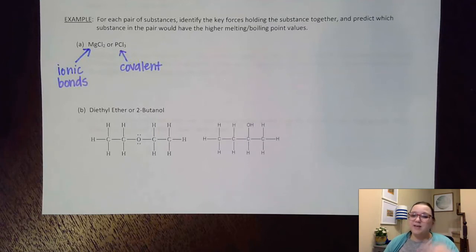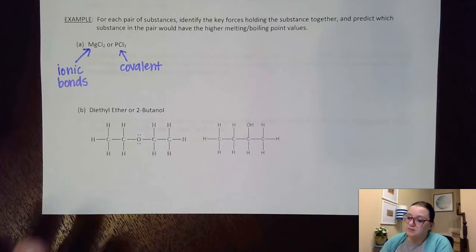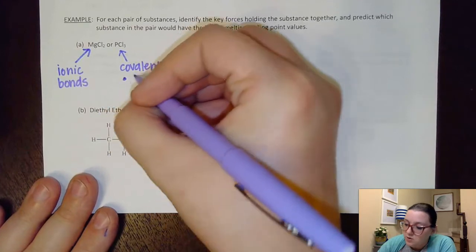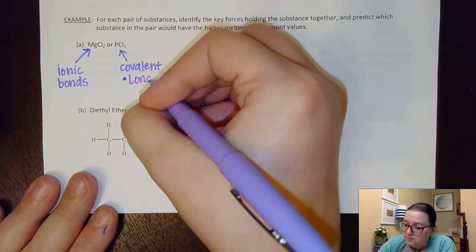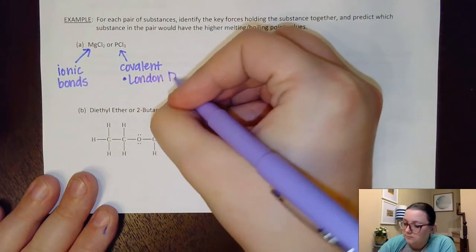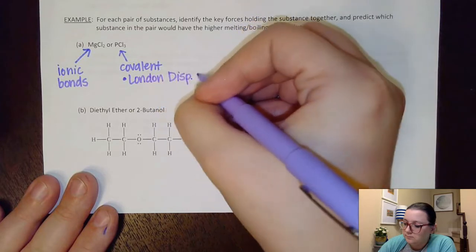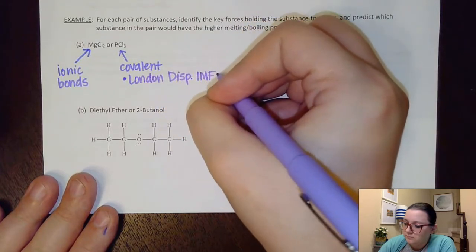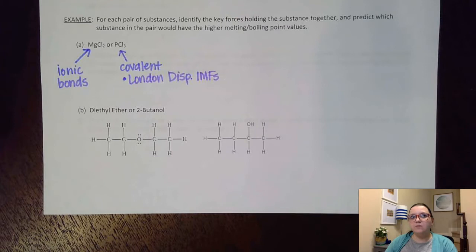Now, PCl3 was covalent, and it's not one of those network covalent ones. It doesn't have carbon or silicon in it, so there I'm going to identify my types of IMFs. First off, being covalent, I know I would have London dispersion forces, and then I need to ask myself, is it polar or nonpolar?